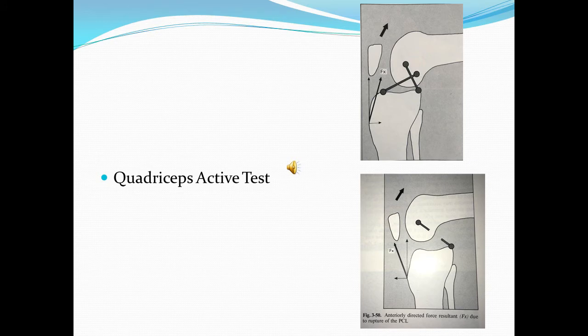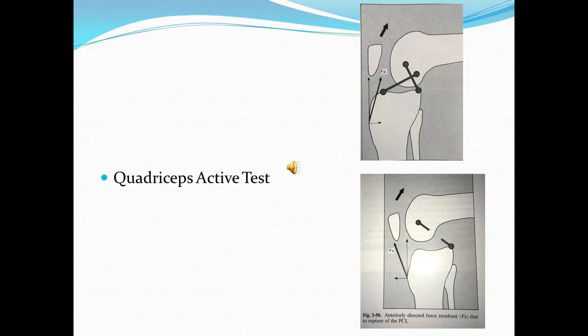Quadriceps active test. In this test, the patient lies supine with the hip flexed to 45 degrees and knee flexed to 90 degrees, with the foot flat on the table. The examiner holds the patient's foot down on the table and asks the patient to attempt to raise the foot. As the quadriceps muscle contracts, the examiner observes the change in anterior contour of the knee. If the knee ligament is intact, quadriceps contraction will cause the proximal end of the tibia to move posteriorly by 0 to 2 mm, as the resultant force FX is directed posteriorly. If the PCL is torn, the resultant force will anteriorly displace the proximal tibia.